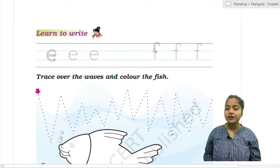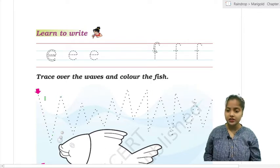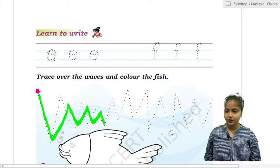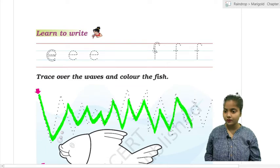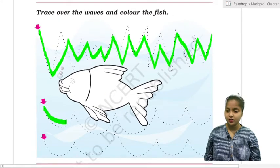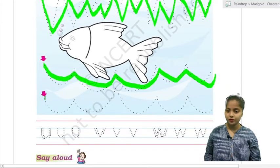Now trace over the waves and color the fish. You have to trace this path, this zigzag path. I am unable to trace this with digital pen but you have to trace this path and you have to color this fish and you also have to trace these waves also, these down waves also.